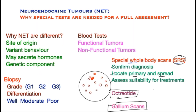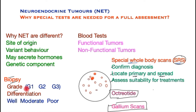Biopsy is critically important in neuroendocrine tumors to determine the grade. The grade is determined by examining the tumor under a microscope at high power and counting cells that are actively dividing. The tumor is then graded as G1 with very good prognosis, G2 with intermediate prognosis, and G3 with poor prognosis, as more and more cells are found to be dividing as one goes up the scale.